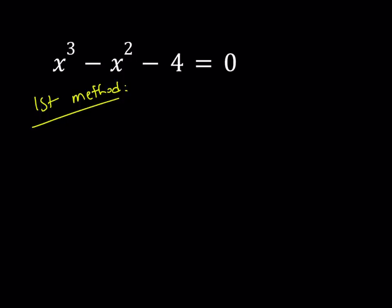What is that supposed to mean? It means that I can break down the -4 into -8 + 4 because I can write this as x³ - 8 - x² + 4 = 0.